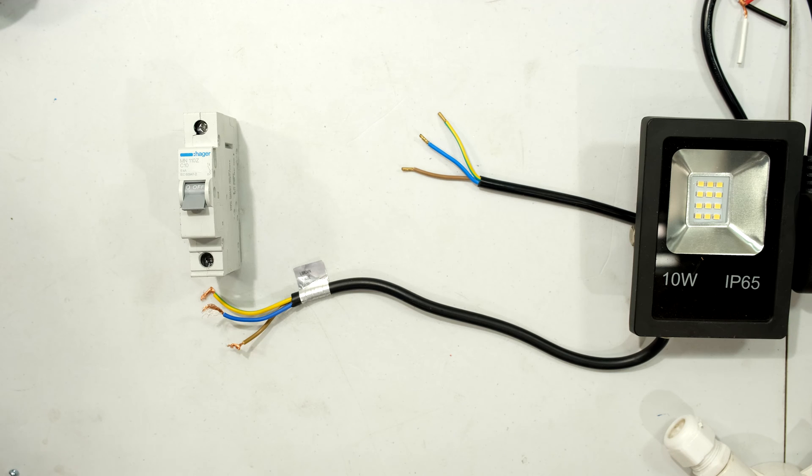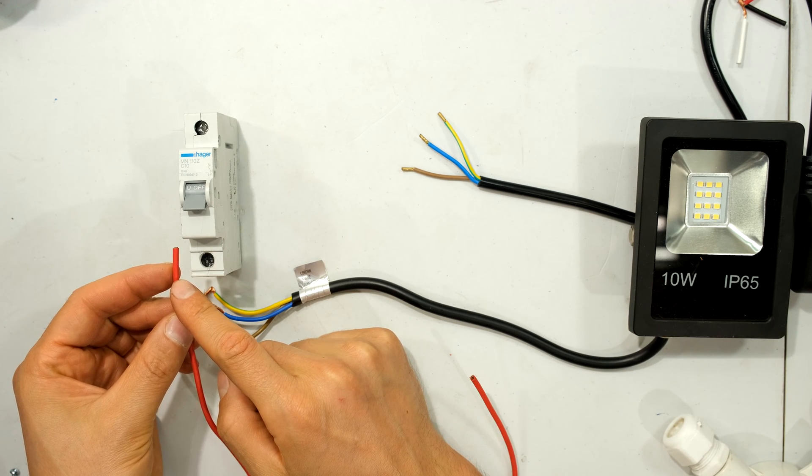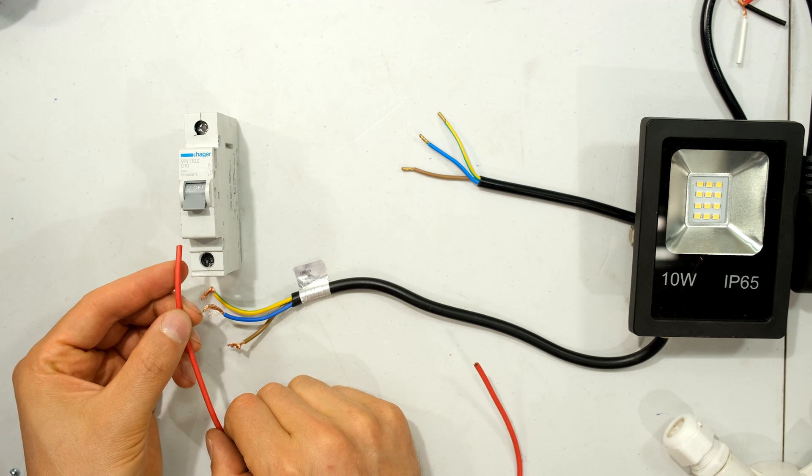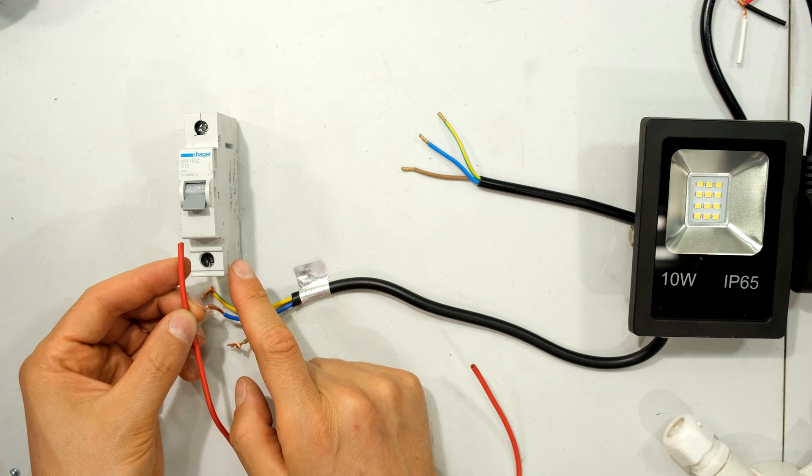Now the wire size is very important. For example, this is a 1.5mm wire and this is a 10A circuit breaker. This wire is sufficient for this breaker running at 220 or 230 volts.